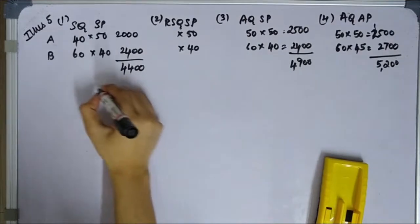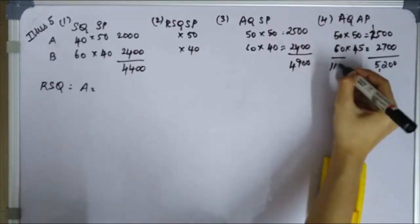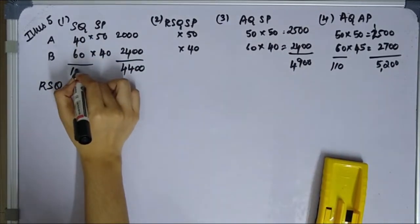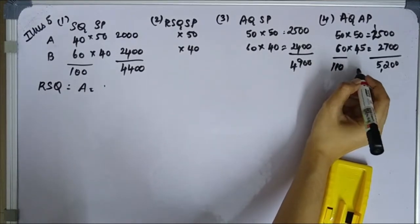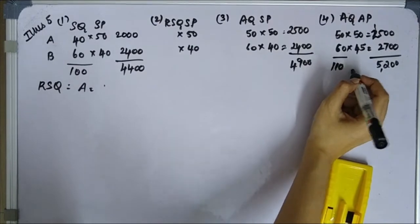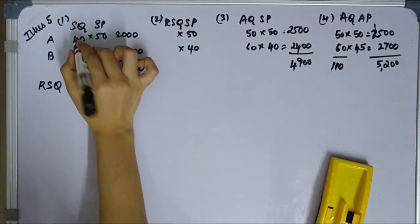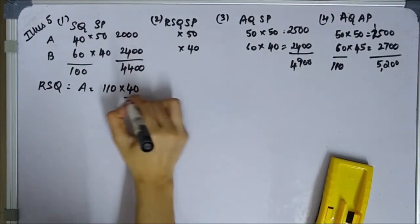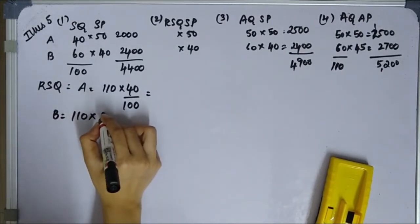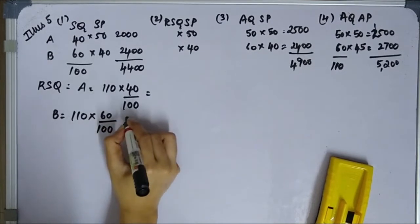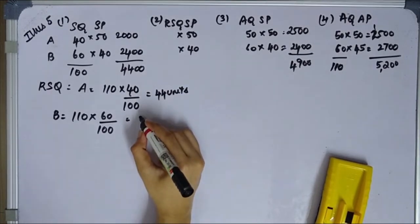Now calculate RSQ — Revised Standard Quantity. The total actual quantity is 110 (A=50, B=60), and the total standard quantity is 100. RSQ is calculated by apportioning total actual quantity in the ratio of standard quantities. For A: 110 × 40/100 = 44 units. For B: 110 × 60/100 = 66 units.